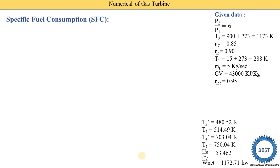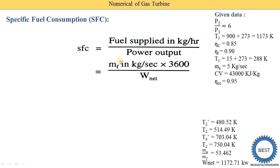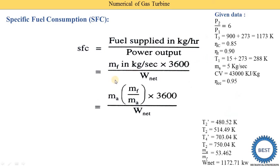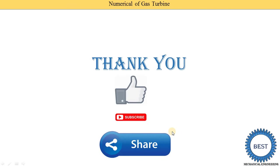Finally, we find the specific fuel consumption (SFC): SFC = fuel supplied in kg/hour / power output = (MF × 3600) / W_net. Since MF = MA × (MF/MA) = 5 × (1/53.462) kg/s, we multiply by 3600 to convert to kg/hour, then divide by W_net = 1172.71 kW. Calculating gives SFC = 0.2871 kg/kWh. All parameters for this numerical are now found.